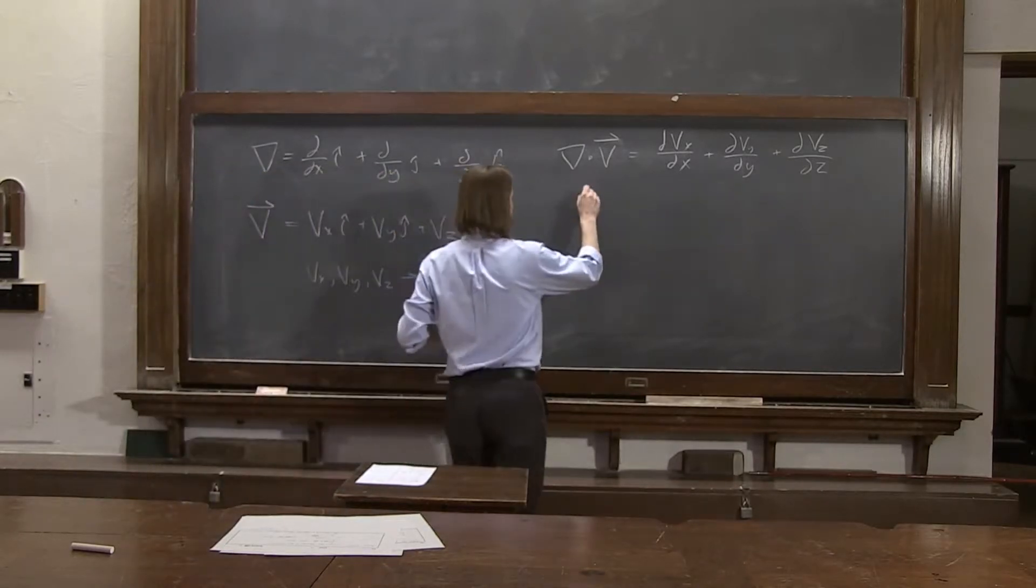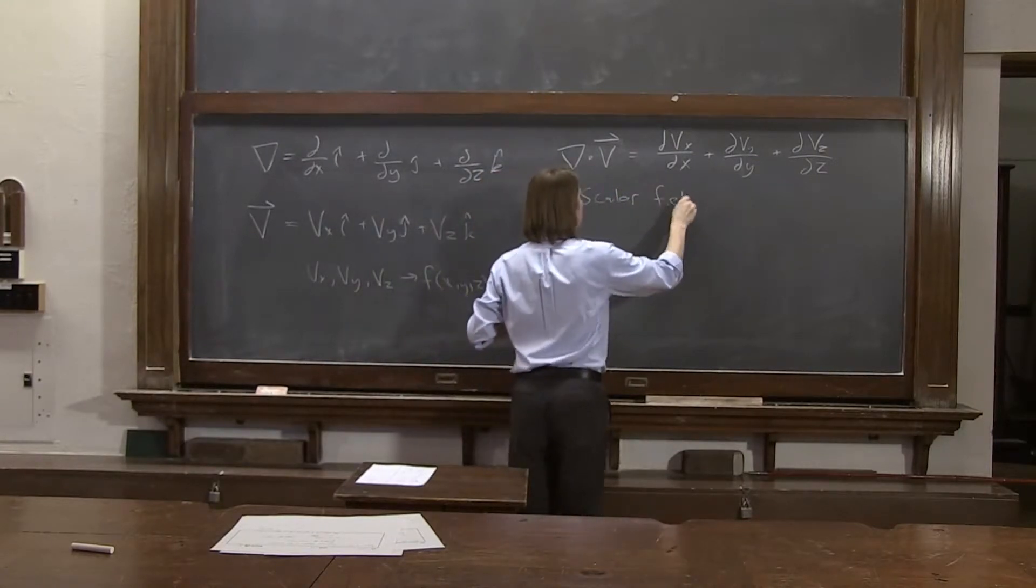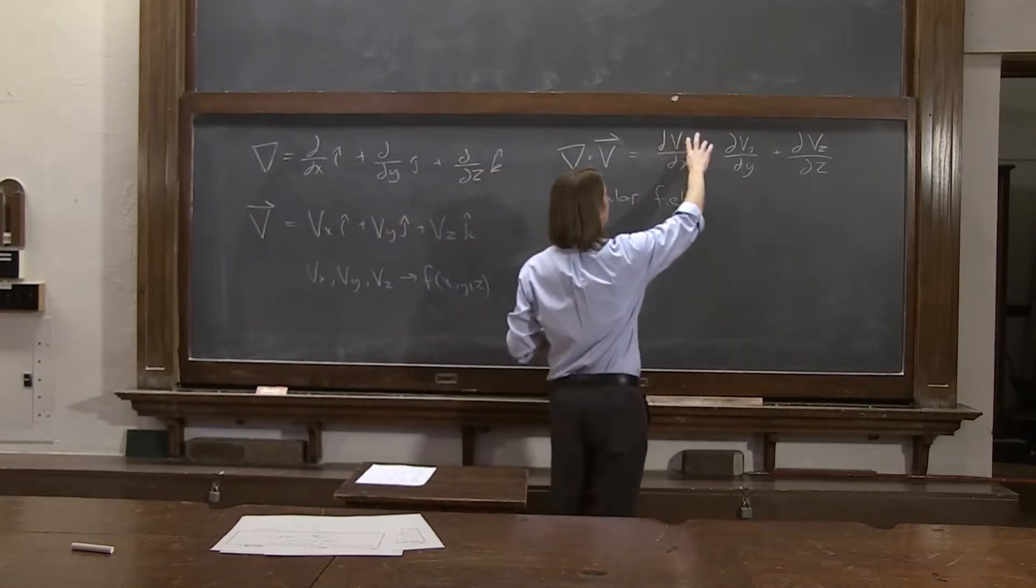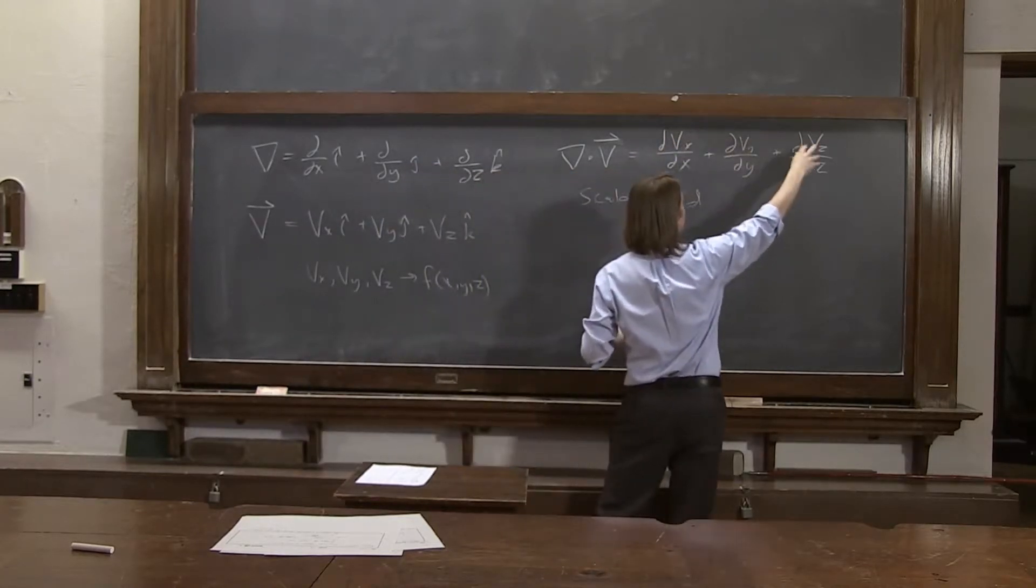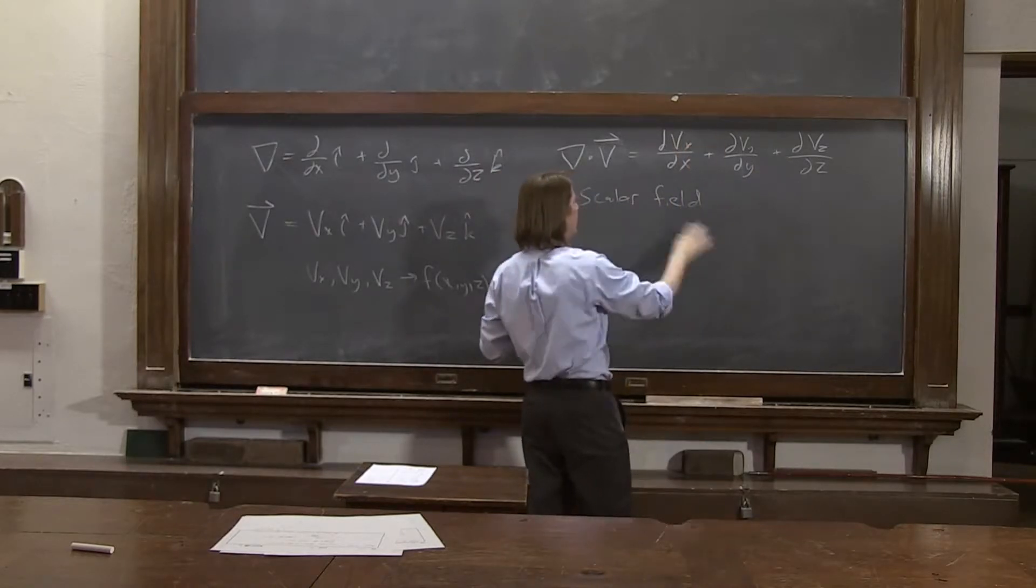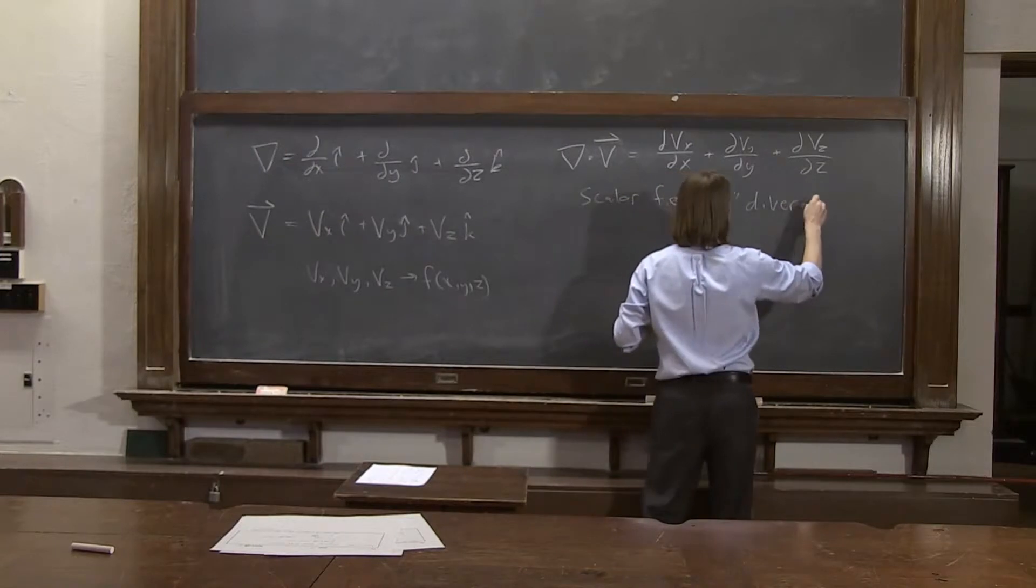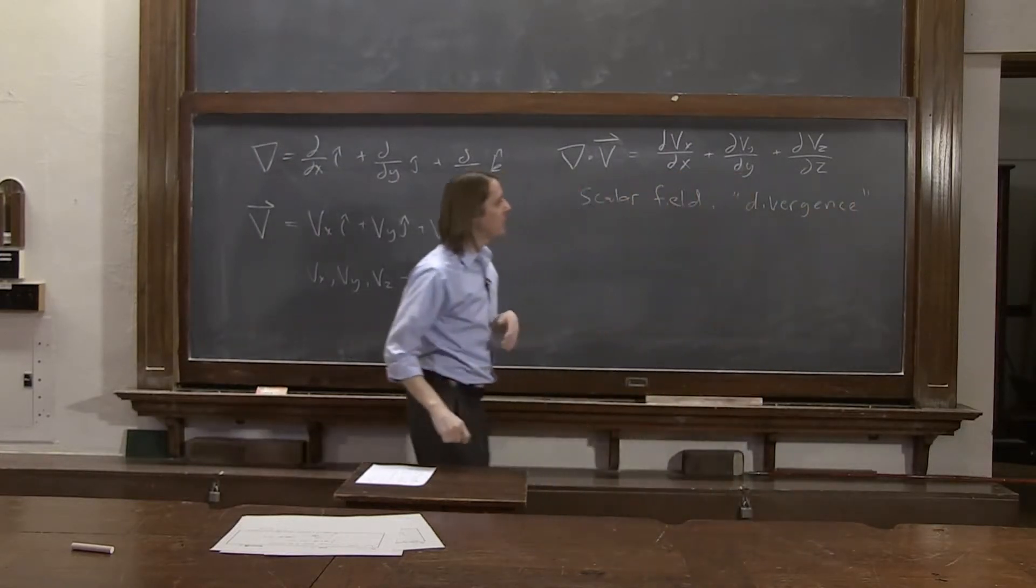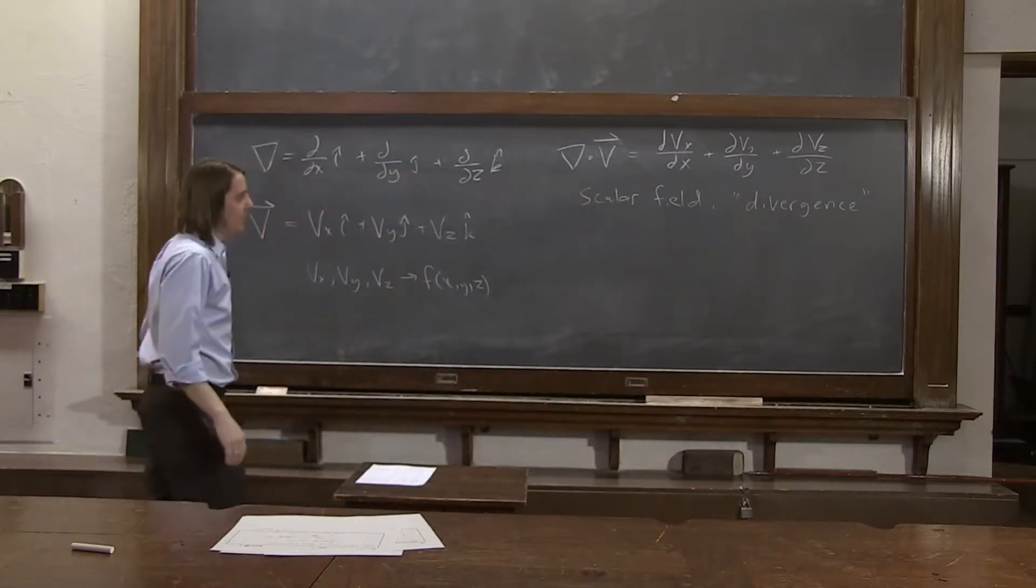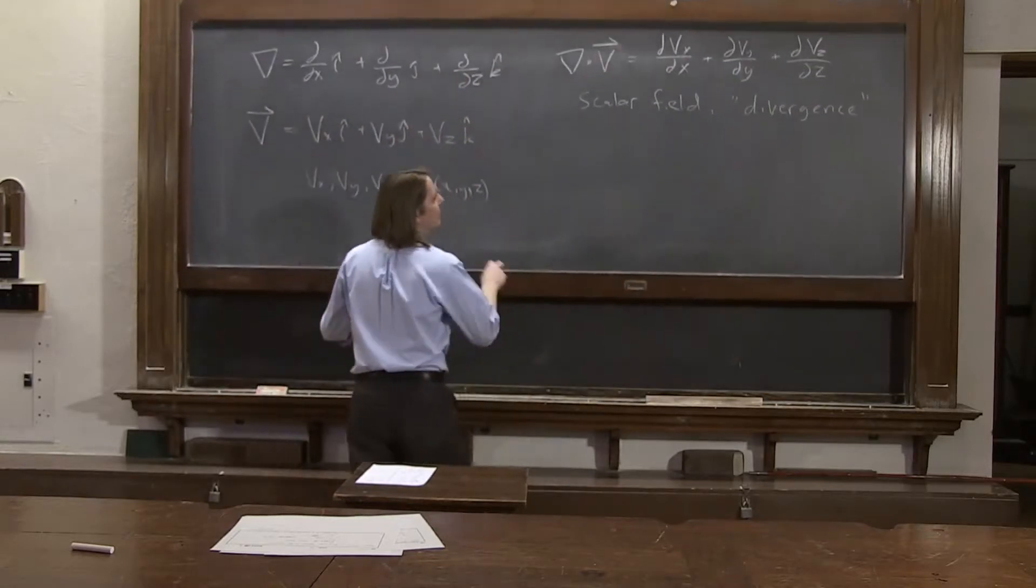So if we do this, it's called, it gives you a scalar field, first of all. Dot products always make scalars, and these make scalar fields. So this is some function of x, y, z, function of x, y, z, function of x, y, z. Add them together. It's a great big function of x, y, z. It's a scalar field. And it's called the divergence, is the name of this derivative. You take a vector field, take its dot product, or take a del dot with that vector field, and you get the divergence.